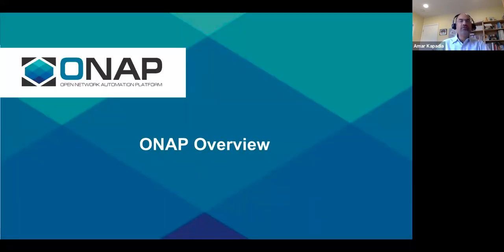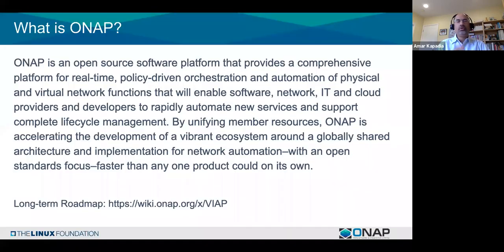For those new to ONAP, ONAP essentially provides three things: orchestration, lifecycle management, and control loop automation of network services and other workloads. It's applicable for software, network, IT, and cloud providers and developers — so it has wide appeal in terms of who it can help and a wide range of services and workloads it can manage.